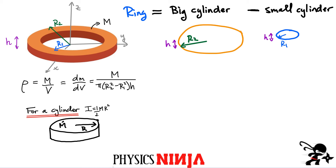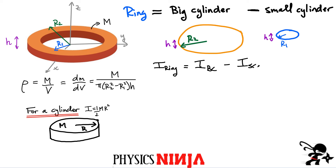You construct the ring by starting with a big solid cylinder of radius r2 with no hole, and then removing a small inner cylinder of the same height but smaller radius r1. That means the moment of inertia of the ring equals the moment of inertia of the big cylinder minus the moment of inertia of the small cylinder. So: I_ring = I_BC − I_SC = ½·M_BC·r2² − ½·M_SC·r1².